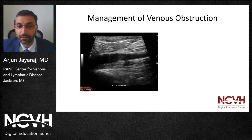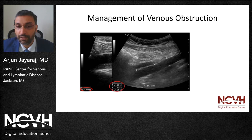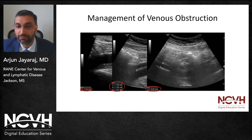This image represents her common femoral vein, narrowed down to 10 millimeters, the external iliac vein down to 12, and the common iliac vein at approximately 9 millimeters. We typically use 12, 14, and 16 millimeters as the diameter cutoffs for the common femoral, external iliac, and common iliac veins respectively.